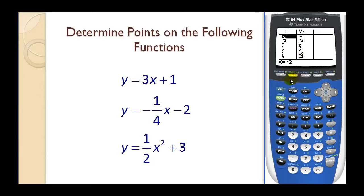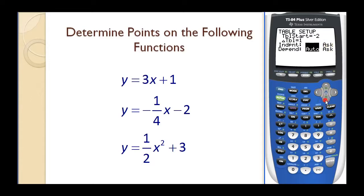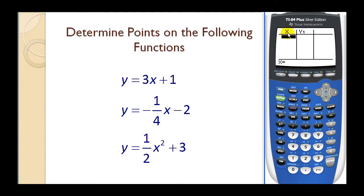Now let's go back to the table set for a moment. Press second window and change the independent variable to ask, then press enter. Now we go back to the table with second graph. Notice how both the x and the y values are blank — it's waiting for us to enter specific x values. So if we want to know what y is when x is negative two, we just press negative two and enter.